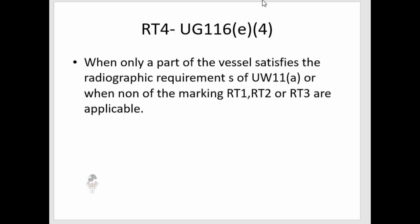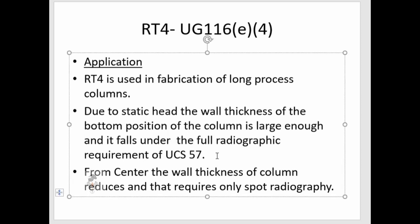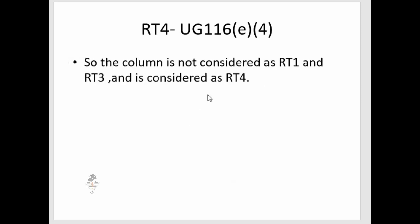RT4 applies when only part of the vessel satisfies the radiographic requirements of UW11A, or when none of the markings RT1, RT2, or RT3 are applicable. For example, in a tall process column, the bottom section has a large wall thickness due to static head and requires full radiographic examination per UCS-57, while the upper section has reduced wall thickness requiring only spot radiography — so the column is classified as RT4.